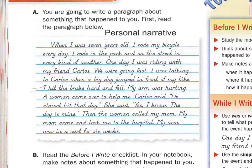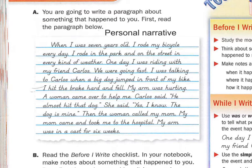Let's look at this example. When I was seven years old, I rode my bicycle every day. I rode in the park and on the street in every kind of weather. One day, I was riding with my friend Carlos. We were going fast. I was talking to Carlos when a big dog jumped in front of my bike. I hit the brake hard and fell.